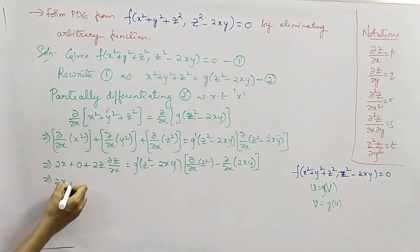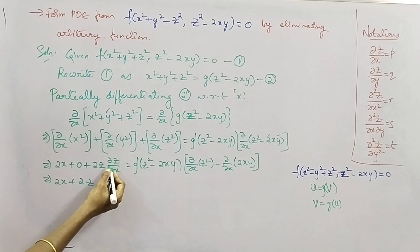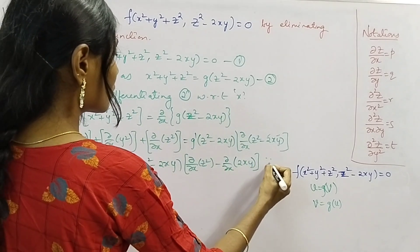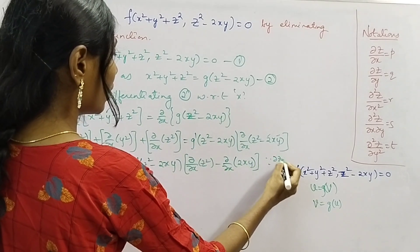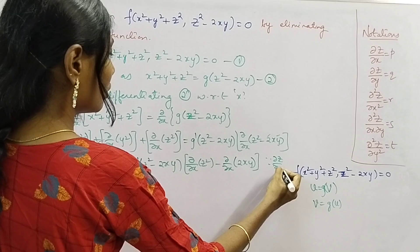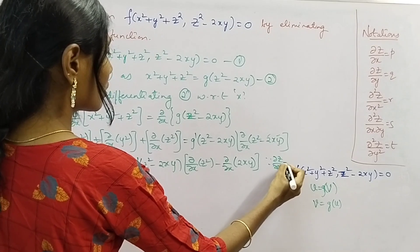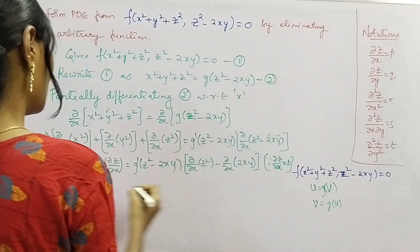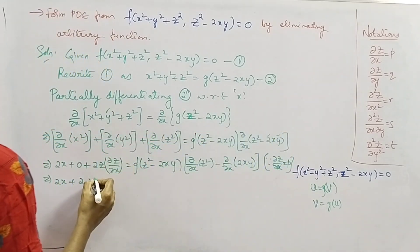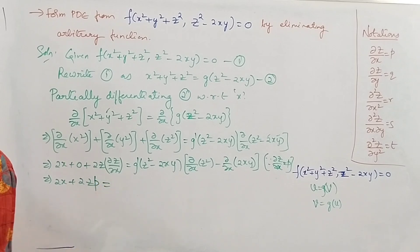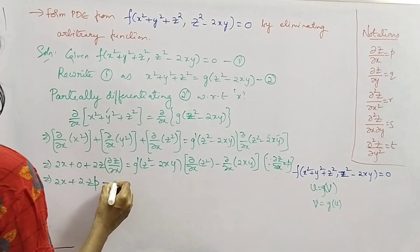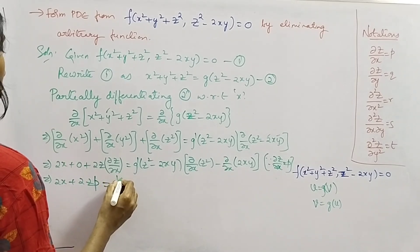Using the standard notation ∂z/∂x = p, we replace ∂z/∂x with p to get 2zp on the left-hand side. So we have 2x + 2zp equal to g'(z² − 2xy) times the inner derivative expression.